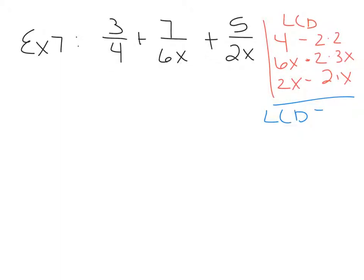Take the whole first list: 2 times 2. Look at the second list — I already have a 2, but I don't have a 3 or an x, so I'm going to take those. Then look at the last list — I already have a 2 and I already have an x, so I don't need anything. Multiply these together: 2 times 2 is 4, times 3 is 12, times x is 12x. Your common denominator is 12x.